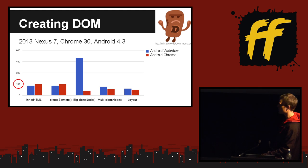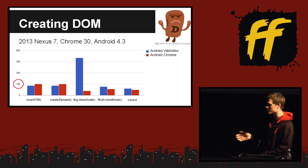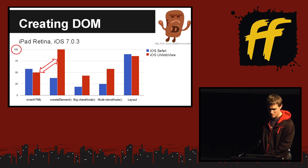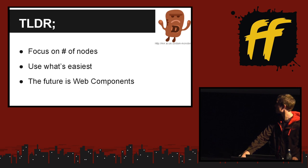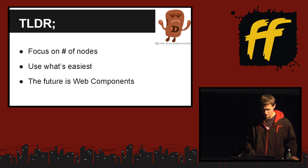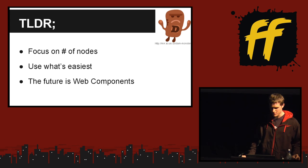For 5,000 nodes — five times as many as Gmail has at start-up — we're only looking at 150 milliseconds, 60 milliseconds, around 50 milliseconds for creation time. So the takeaway is the same as the last section: focus on the number of nodes still, but it doesn't really matter how you create the DOM nodes, because browsers and hardware have come a long way. Web components are very centered around the clone node and template idea, so I think the future will see people using clone node a lot more.